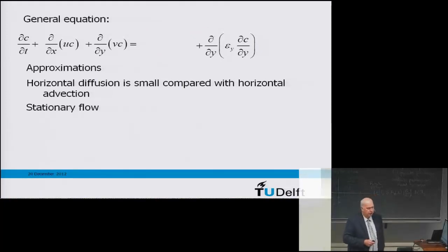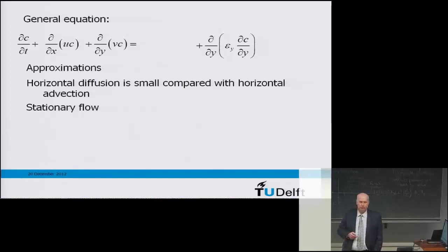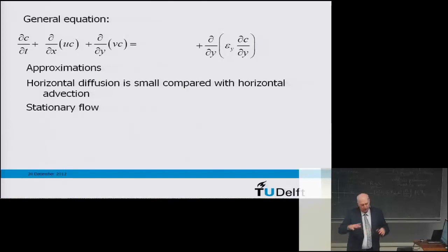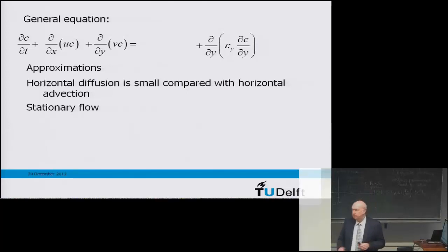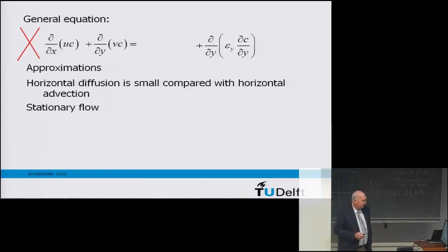The second approximation for the ideal settling basin is that we have a stationary flow — no change in time. After some time we have a stationary situation and nothing changes in time, so the dc/dt term drops out. That's stationary flow.